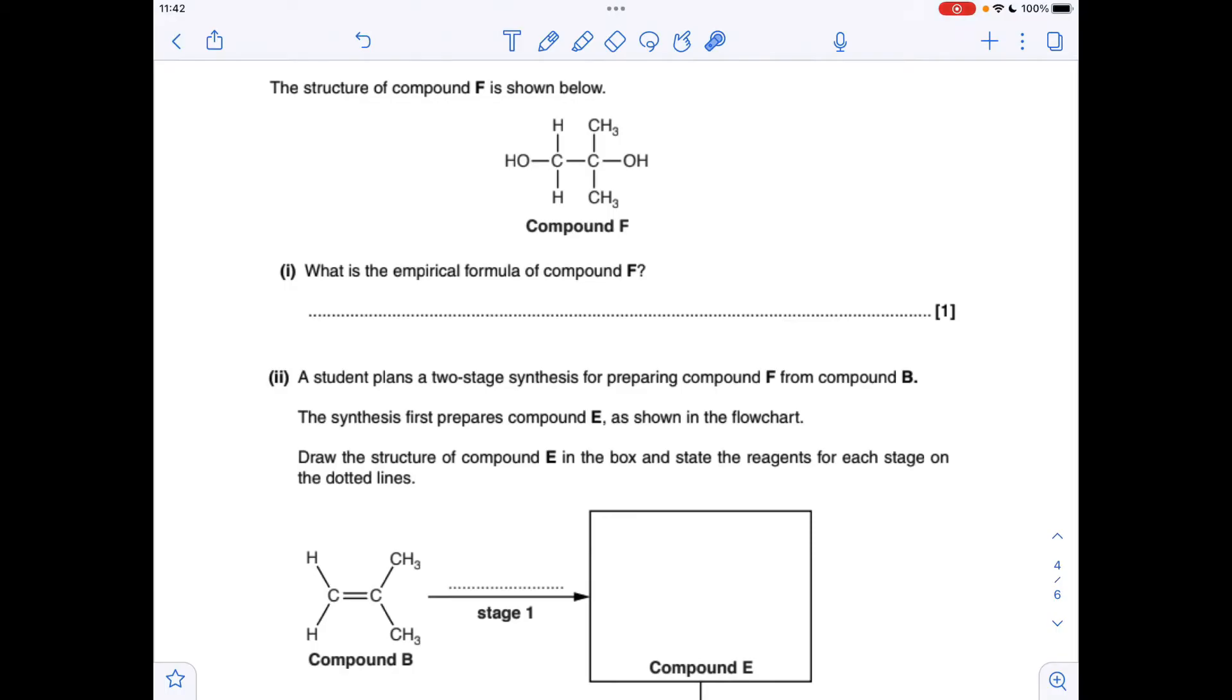Moving on to the next question. The first thing we'll do is work out the molecular formula of compound F. So it's got 4 carbons, 10 hydrogens, 2 oxygens. Obviously we can turn that into a simpler set of whole numbers. Just divide through by 2. So the empirical formula is C2H5O.